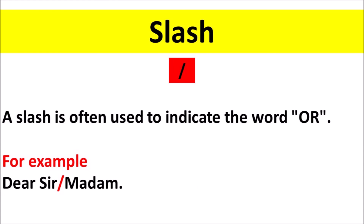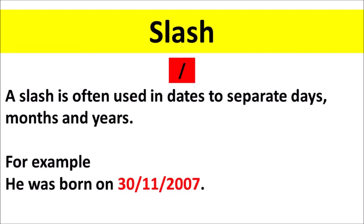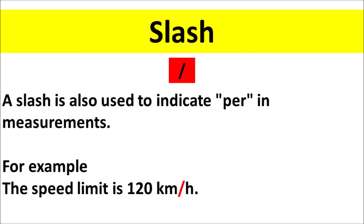Slash: a slash is often used to indicate the word 'or'. For example: 'Dear sir/madam.' A slash is also used in dates to separate days, months, and years. For example: 'He was born on 30/11/2007.' A slash is also used to indicate 'per' in measurements. For example: 'The speed limit is 120 kilometers/hour.'